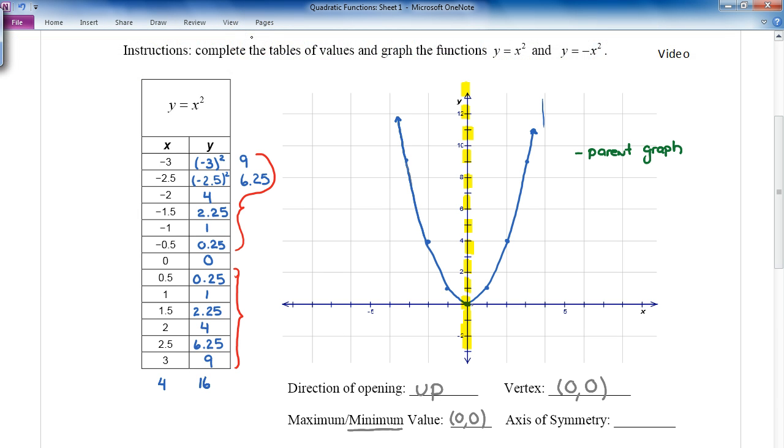Very important here: whenever we write the axis of symmetry, we write it as the equation of a line. So the axis of symmetry here is x = 0, because notice this vertical line is x = 0.